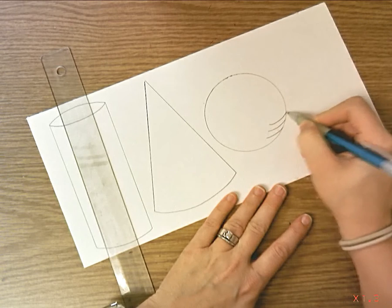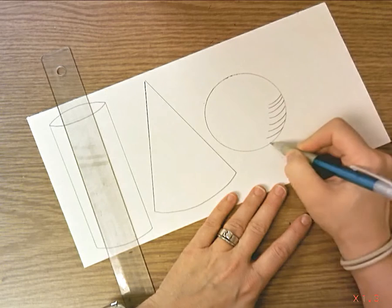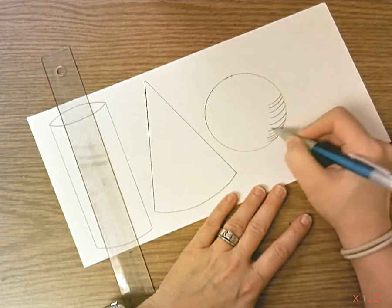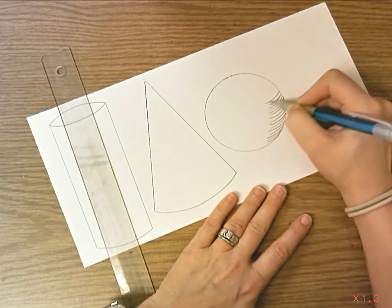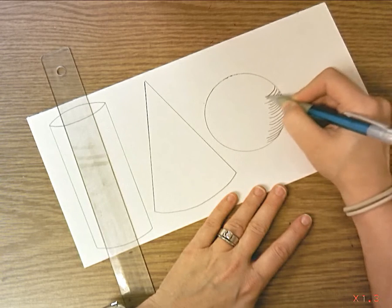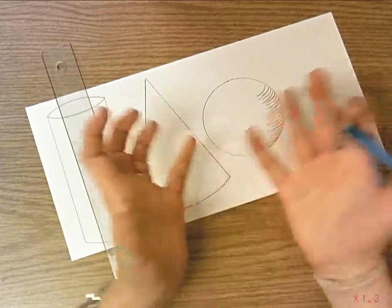Hatch marks, shading, on one side of the sphere. And you want these lines to be curved and not straight because that creates the illusion of a curved surface. And we know a sphere is a ball and it has a round curved surface.